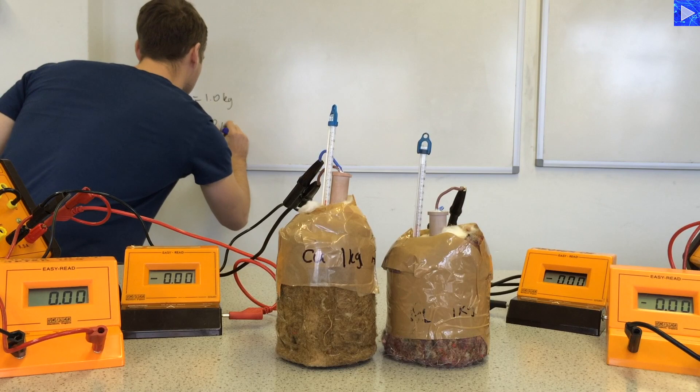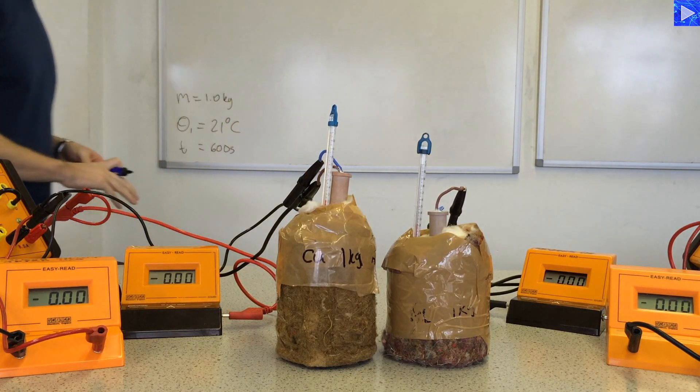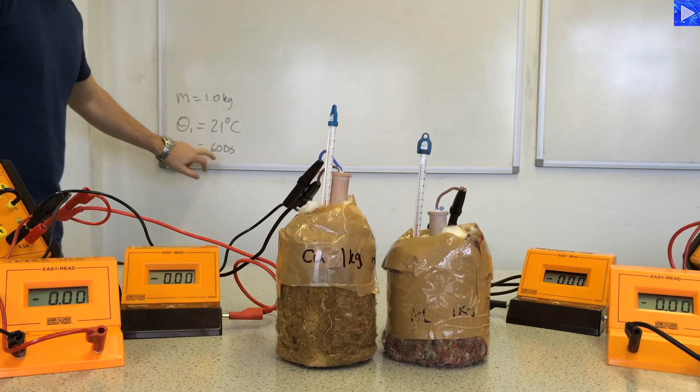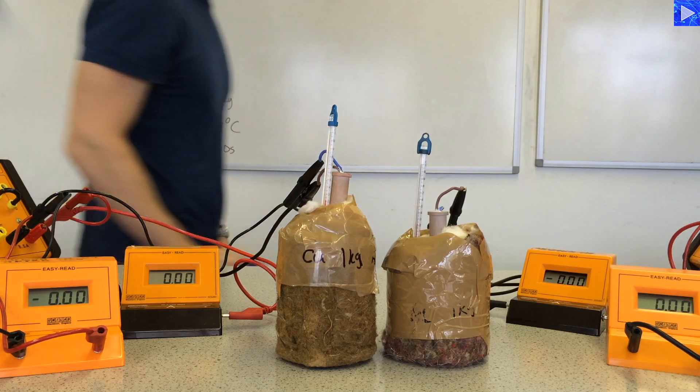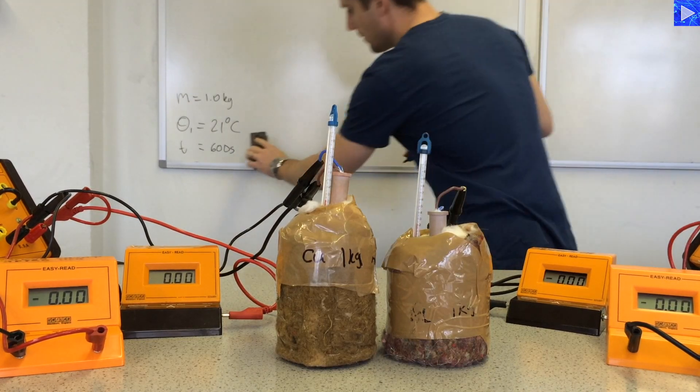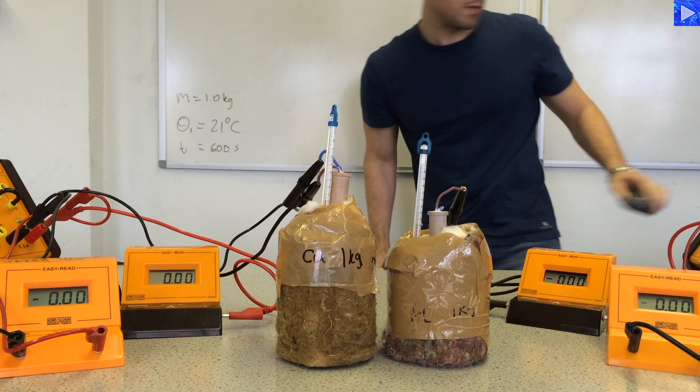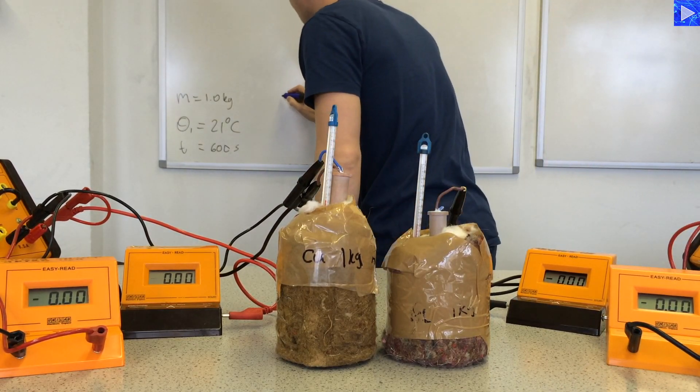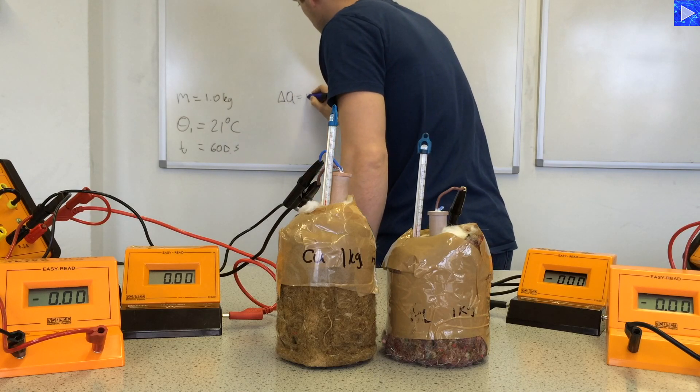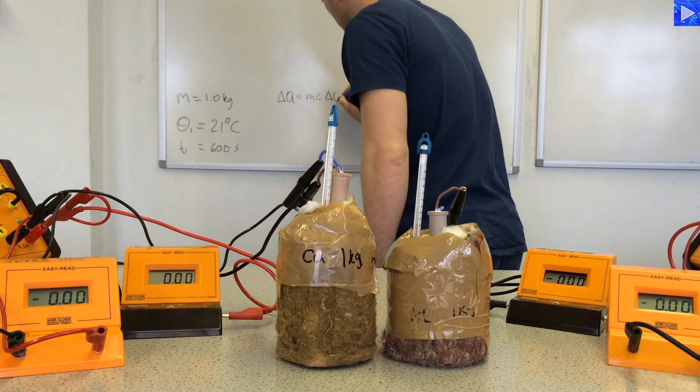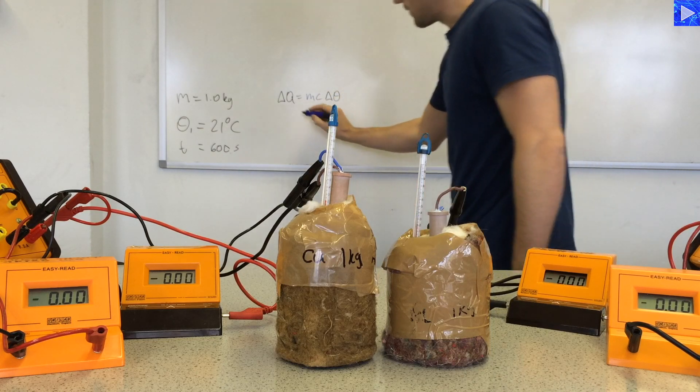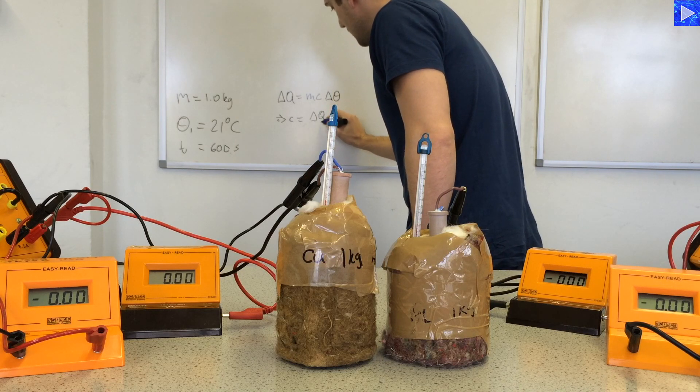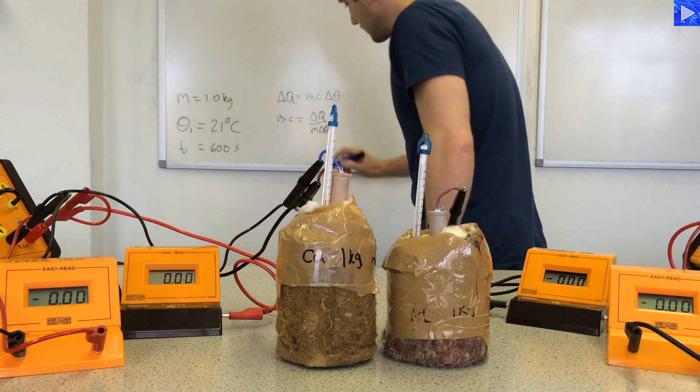Theta 1 is 21 degrees C. I have recorded the mass and the time that I will be recording for, so that it doesn't look like 600 seconds. The equation we will be using is delta Q equals MC delta theta. We will be looking for C, so C is delta Q over M delta theta.